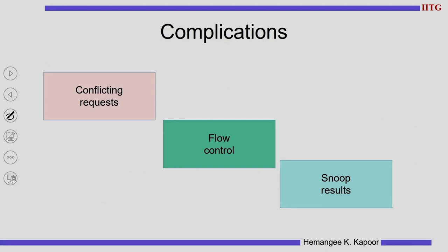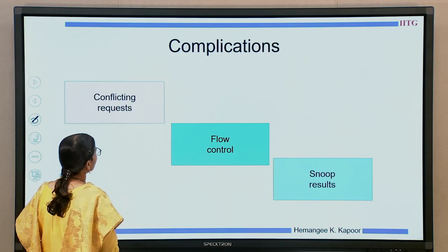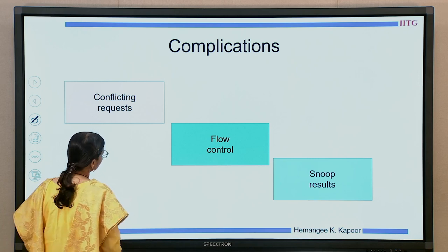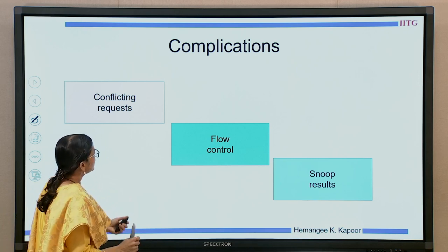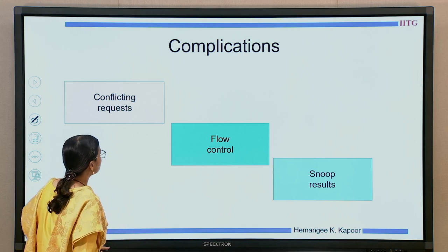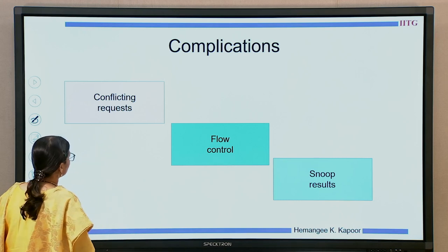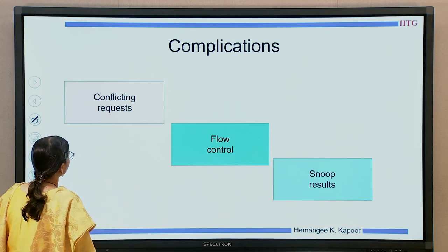When I divide transactions into request and response, it leads to some complications that we need to handle. The first is conflicting requests — when I have multiple transactions on a block, is it allowed to have reads as well as writes for the same block happening with some transactions still pending? Then we need to handle flow control and snoop results. I will elaborate on these one by one.